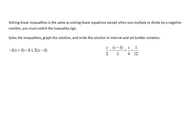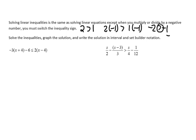Now let's solve some linear inequalities. Solving linear inequalities is the same as solving linear equations, except when you multiply or divide by a negative number, you must switch the inequality sign. For instance: 2 is greater than 1. If I multiply both sides by negative 1, I get negative 2 is greater than negative 1 — that's not a true statement. If I switch the inequality sign, now I have a true statement. A similar argument applies to dividing both sides by a negative.